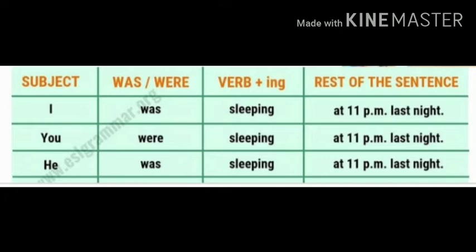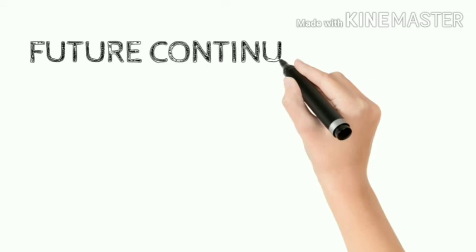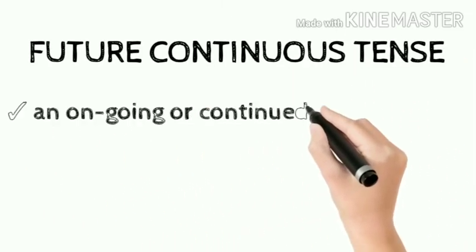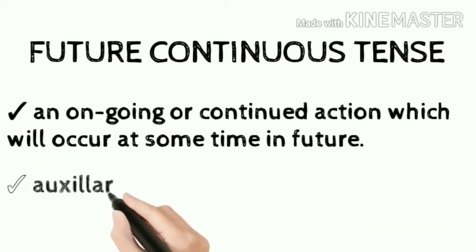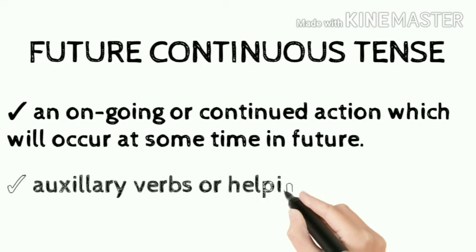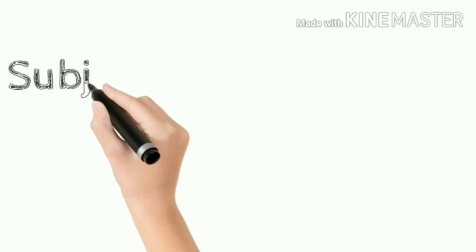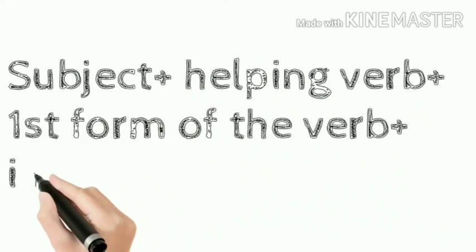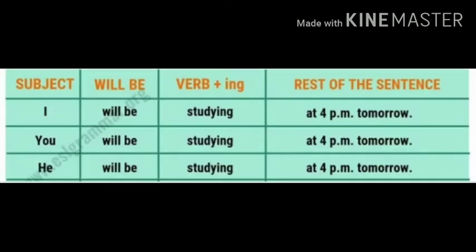The third one is the future continuous tense. It expresses an ongoing or continued action which will occur at some time in the future. The auxiliary verbs or helping verbs are will be or shall be. The rule says: subject plus helping verb plus first form of the verb plus -ing plus the object.